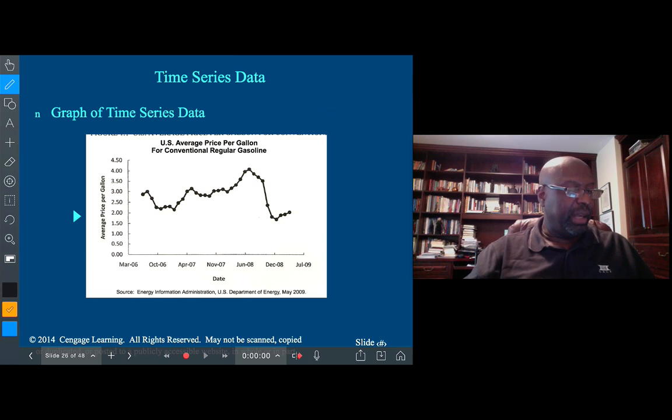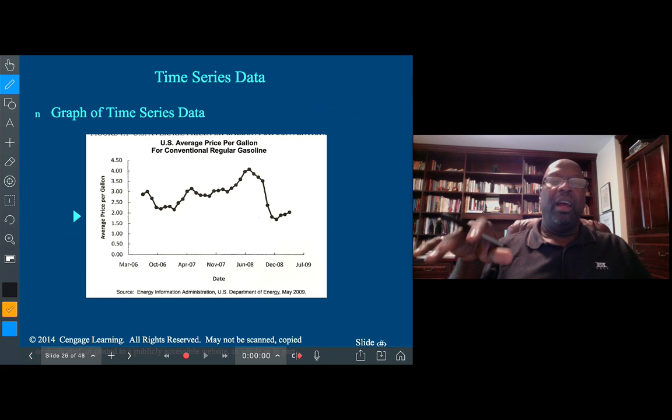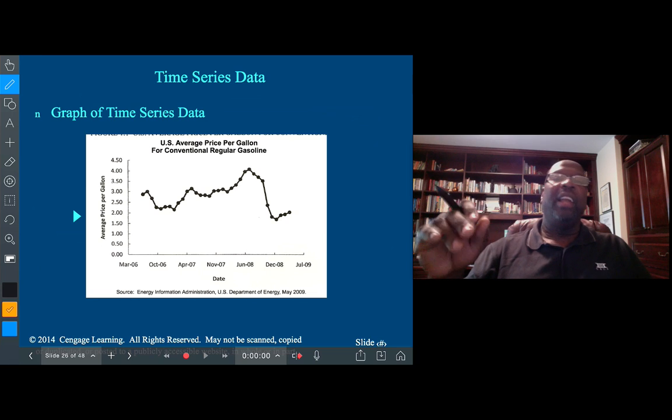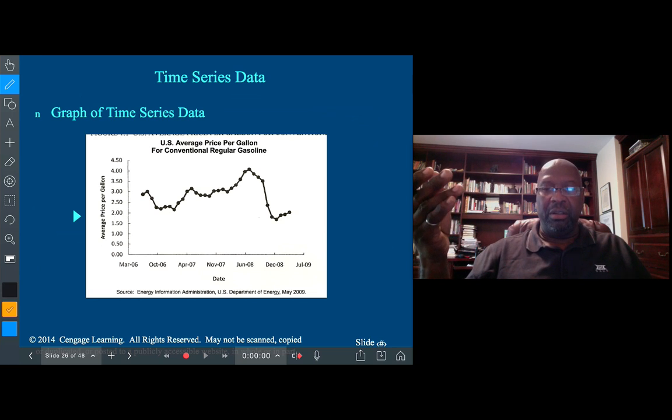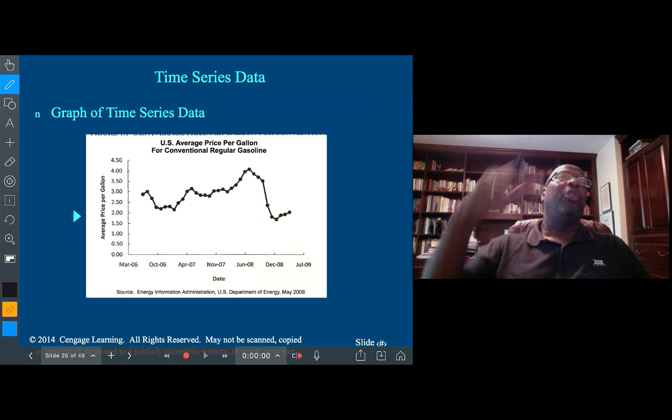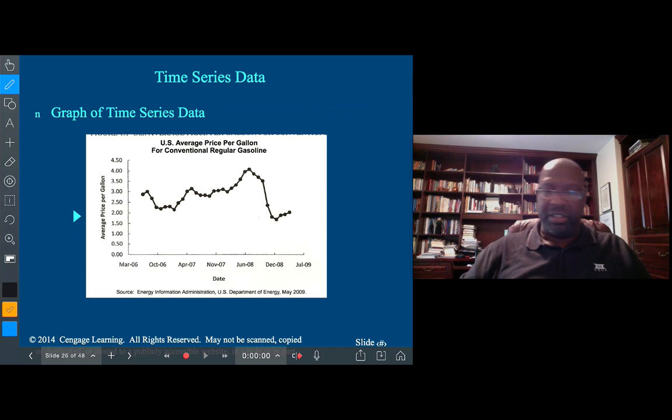So that can be quite useful in terms of just getting a snapshot of what's taking place. For example, we could say if we look at a particular Thursday, the attendance in all of the classes, or the percentage attendance in all of the classes that took place in a particular room, let's say SB 260.